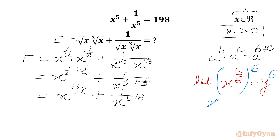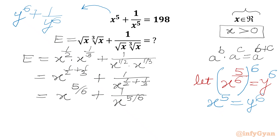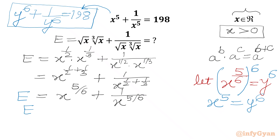The 6 and 6 cancel, giving us x^5 on the left-hand side and y^6 on the right-hand side. Now we can transform our known equation in terms of y: since x^5 = y^6, we write y^6 + 1/y^6 = 198. Our target is to find y + 1/y.